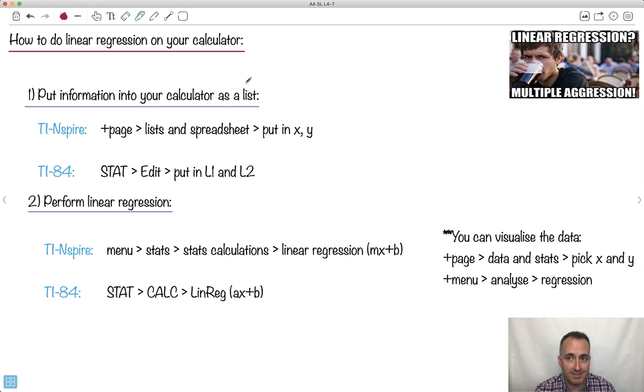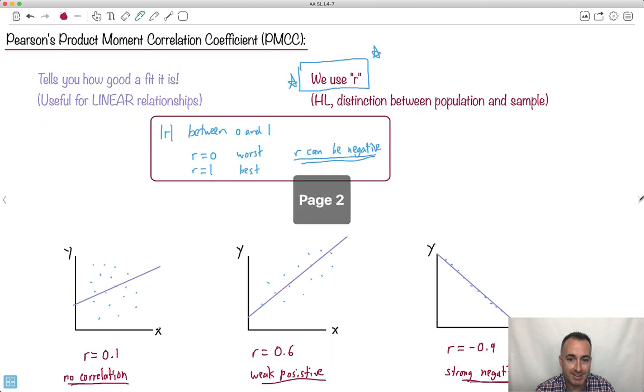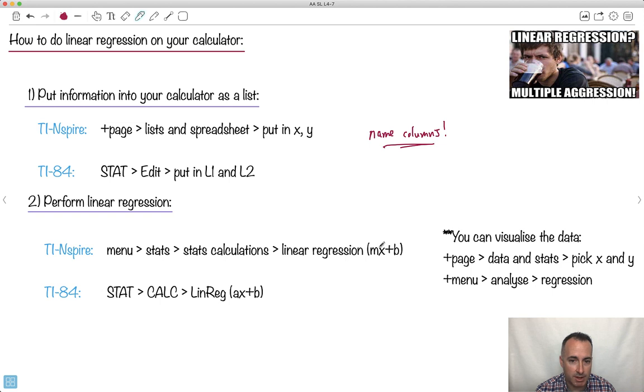Let's go ahead and talk about how we can do this on our calculator like this. It's quite straightforward. Put stuff into list. That's the idea. That's step one. Then step two is do a linear regression. If I'm on the TI-Inspire, add a new page, do a list, put in your X and Y. Don't forget to name your columns. It's really important to name your columns. On the 84, go stat, edit, and put in L1 and L2. Those will be your X's and Y's. Now to do your linear regression, on the inspire, you go menu and stats. Do calculations. Say linear regression, MX plus B. They have all these different symbols. You can do MX plus C, AX plus B, MX plus B. It's all the same thing.